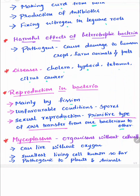The last topic in Monera is mycoplasma. These are organisms without a cell wall — they lack a cell wall and can live without oxygen. The smallest living cell known so far is mycoplasma, and they are pathogenic to both plants and animals.